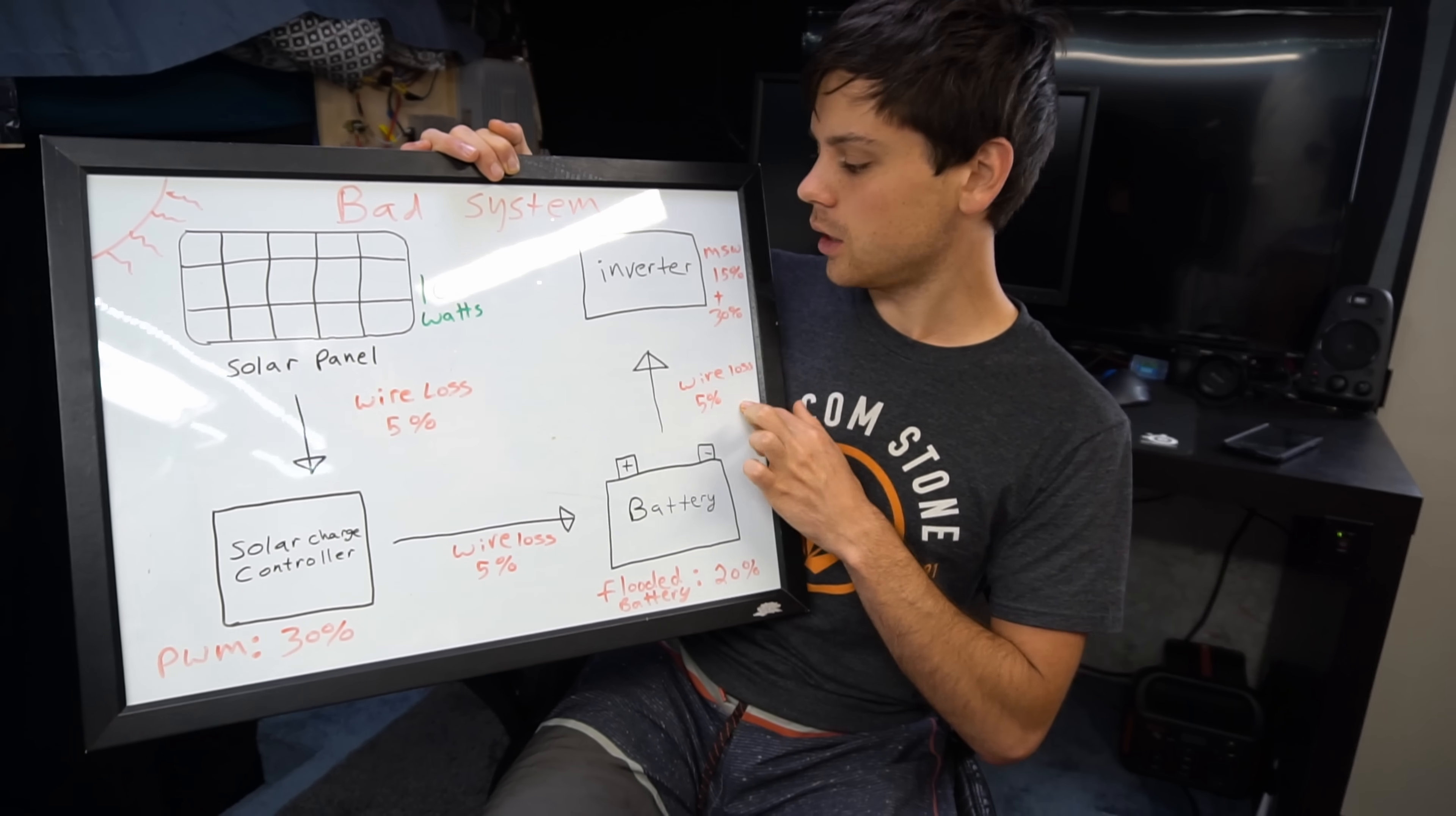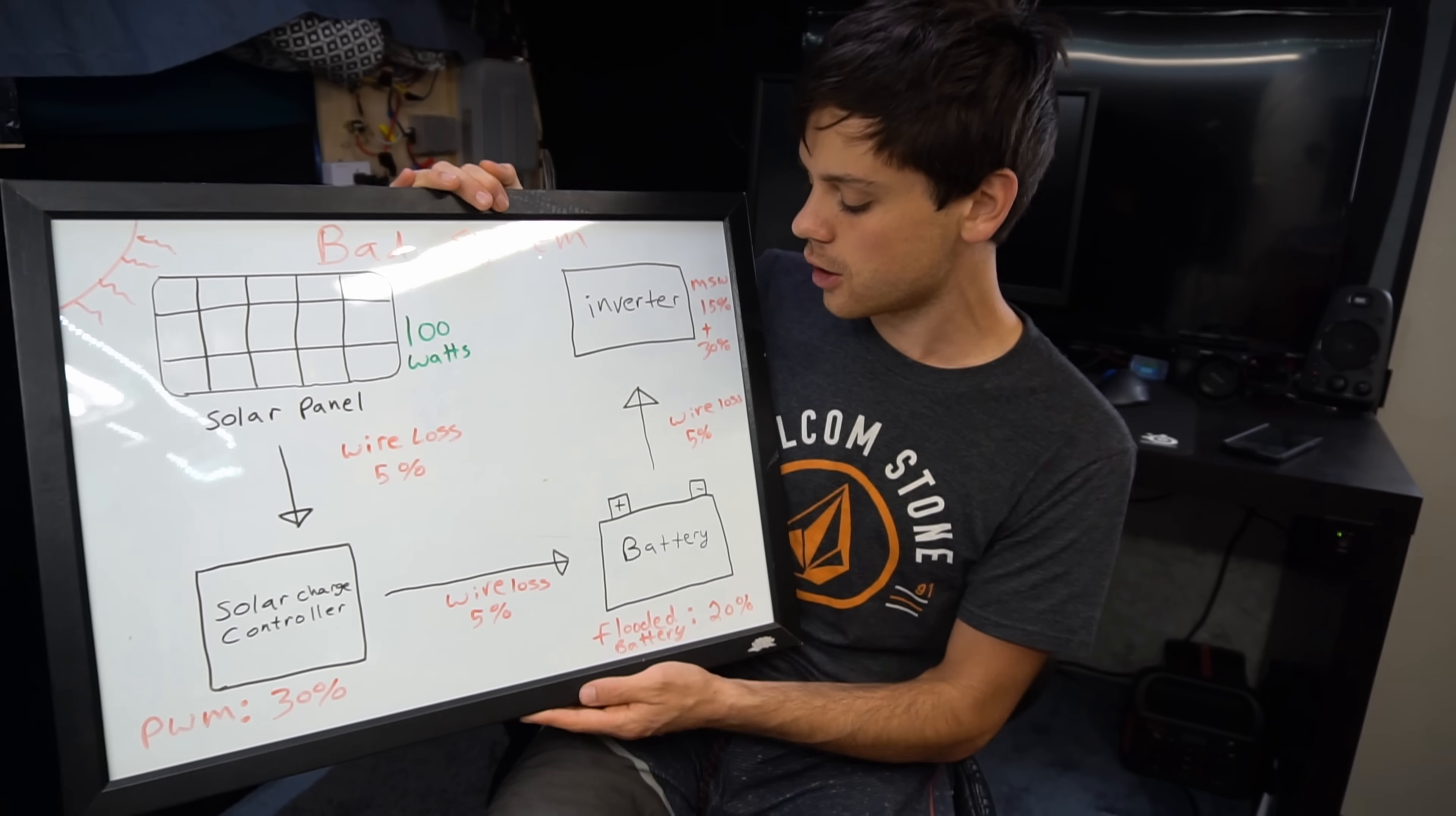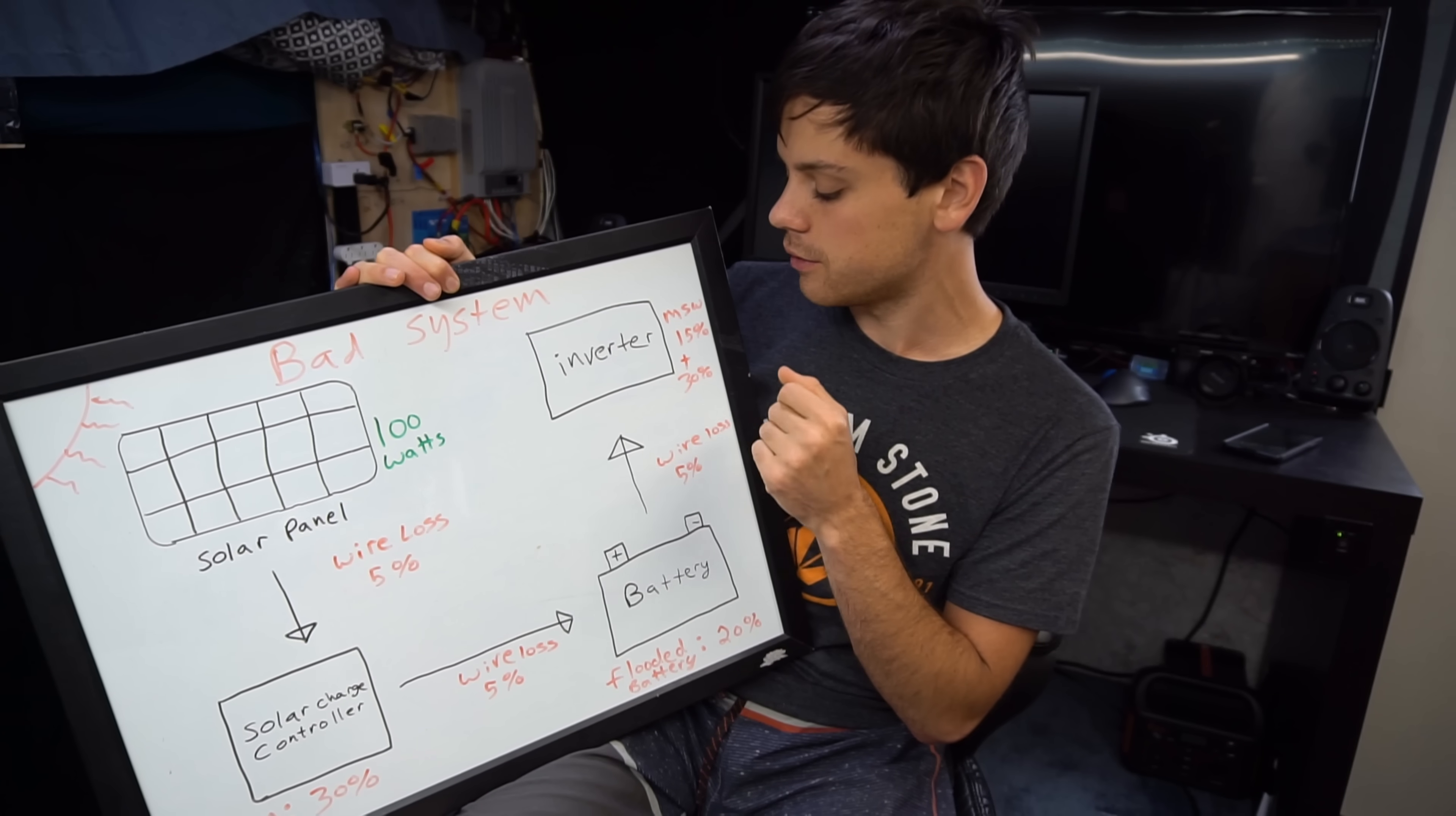Next another 5 percent loss to the inverter because people do not like to have the proper connection terminals and they do not use the proper gauge wire. They might just use four gauge wire for a 2,000 watt inverter. So let's say another 5 percent loss and then let's use a modified sine wave inverter that's cheap from China and it will have a 15 percent loss automatically just because it's an inverter.